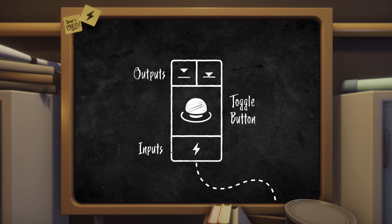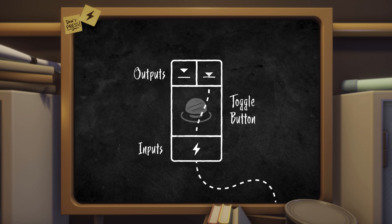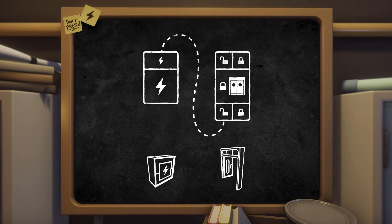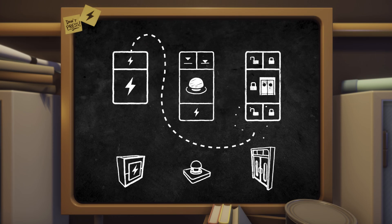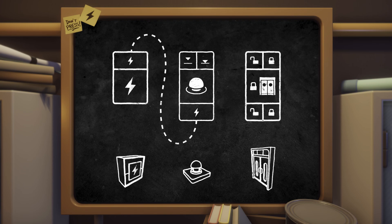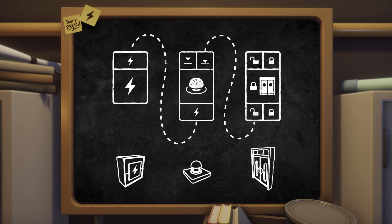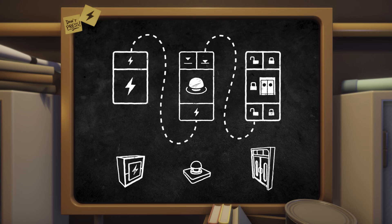The toggle button has two outputs, which are always along the top and are where you start a new power wire, like we did with the power source earlier. The two outputs represent whether the button has been pressed or not. If the button has not been pressed, it will pass power to the first output. If it has been pressed, it will pass power to the second output. Looking at our diagram with the new button added in: I'll disconnect the power source from the door's unlock input and instead connect it to the toggle button's power input. Then connect the toggle button's pressed output to the door's unlock input. When the button hasn't been pressed, the door won't receive power, but when it has been pressed, the power will pass along and unlock the door.